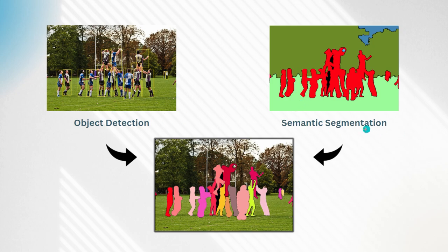Over here you have semantic segmentation, which goes a step further by not only identifying the objects, but also assigning each pixel in the image to a particular object class. The different colors here distinguish the different type of class that it's trying to assign.